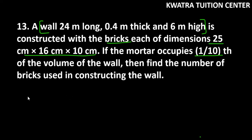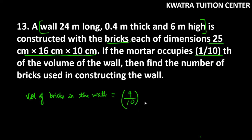First of all we will find the volume of bricks in the wall — that is, how much volume is available for bricks. It will be 9 over 10 into the volume of the wall. The volume of the wall is 24 into 0.4 into 6 — that is length, breadth, and height.